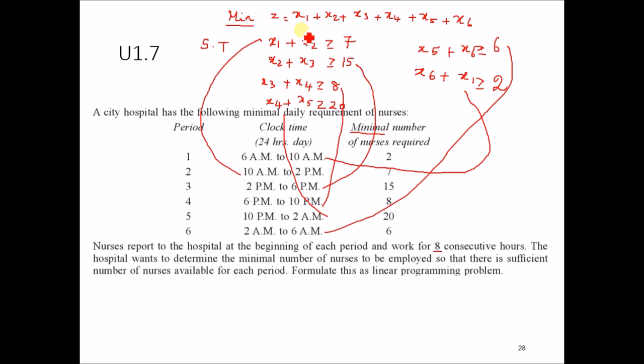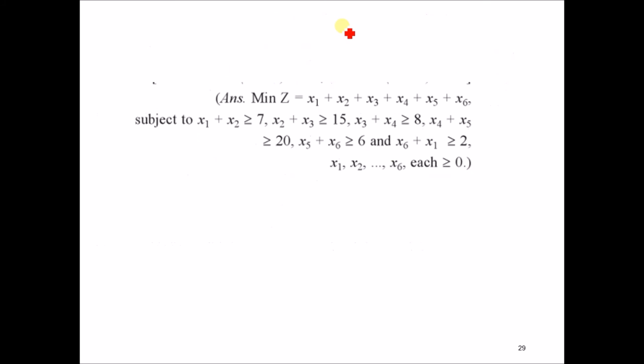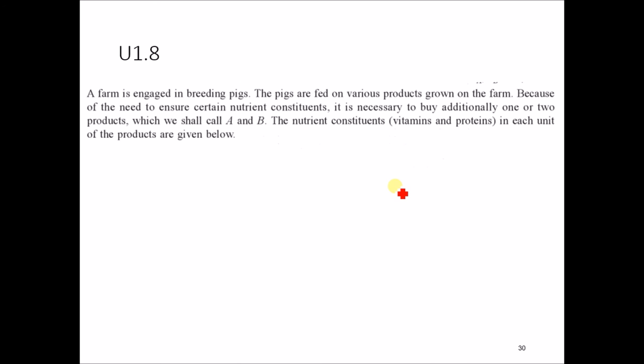The objective function is: minimize Z = x1 plus x2 plus x3 plus x4 plus x5 plus x6. The non-negativity constraints are x1, x2, x3, x4, x5, x6 greater than or equal to 0. We will now see another problem.